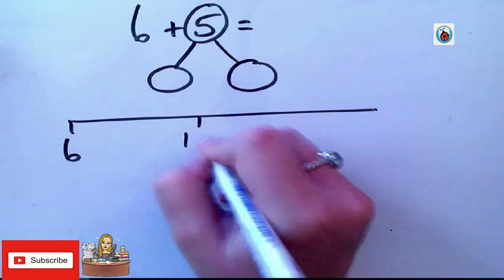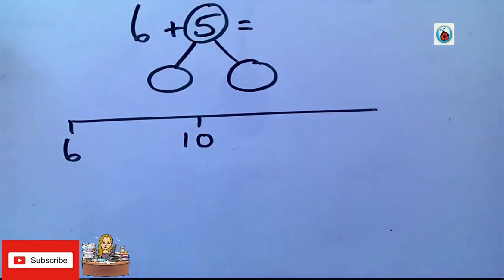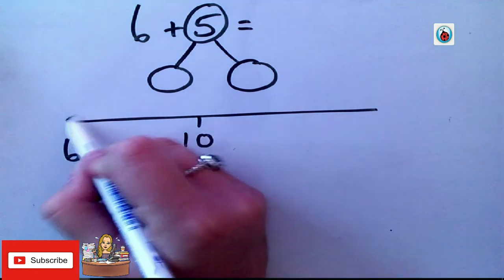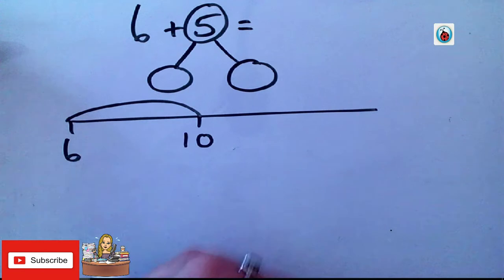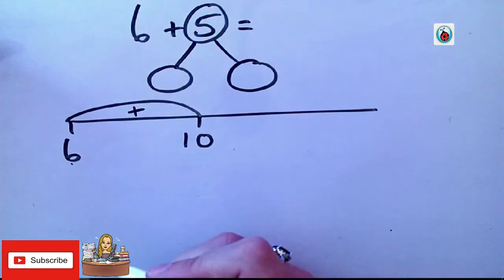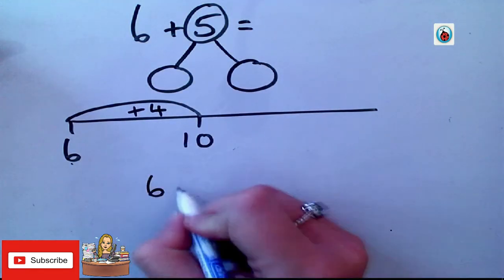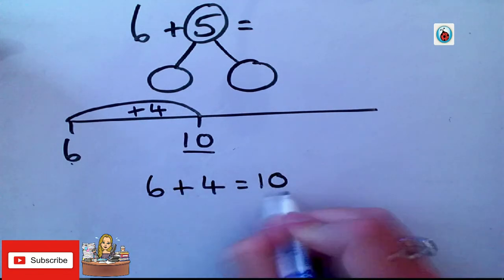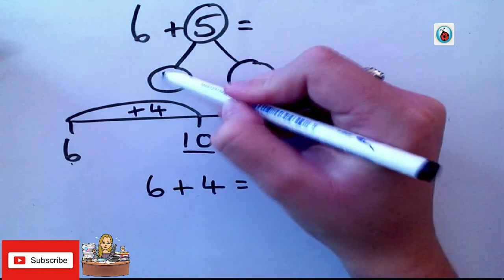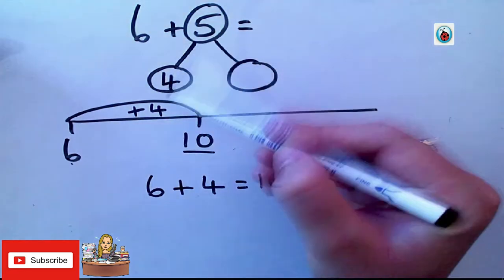Now, I need to get to 10. Remember, I'm always trying to make 10. So, what do I add? If you know your number bonds to 10, that should be really good. What do I add to 6 to get to 10? Good. I add 4. So, my first number calculation is 6 add 4 and I land on 10. So, I've made 10. So, this is the first number that I partition.